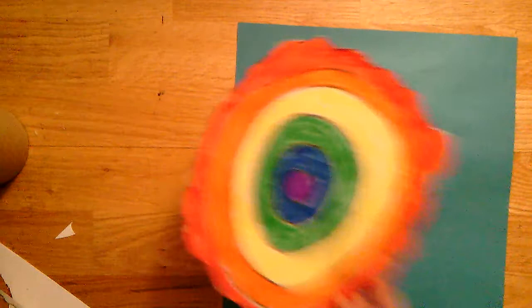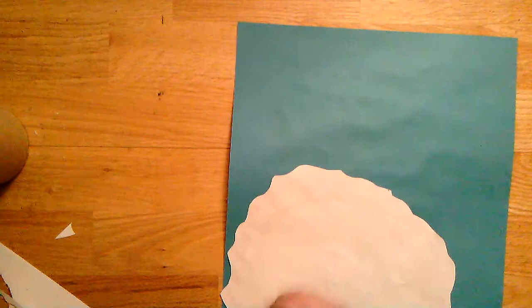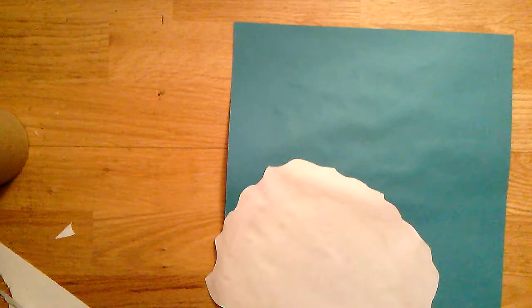Alright, so now it's time to put our flower together. You should have your hand and your flower all cut out. What you want to do first is start with your flower. Put a nice big glob of glue on the back of it, all around those edges, and stick that down right up here on the top.